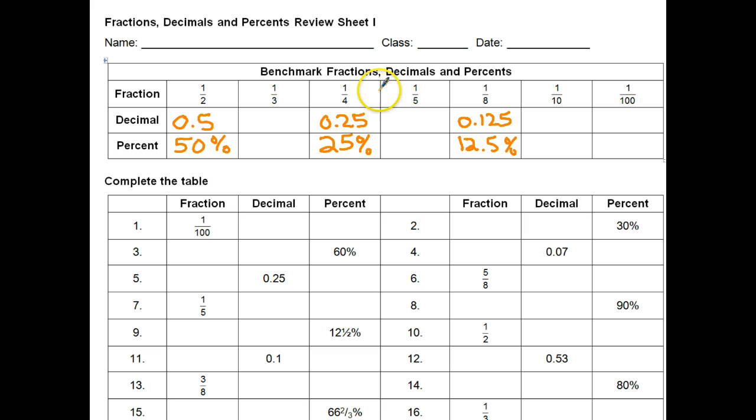So halves, quarters, and eighths - if you know a fraction of a half as a decimal in percent, you can work out a quarter and an eighth. Now one tenth is quite easy. It's just basically a tenth of a hundred percent, because a tenth of a hundred percent is ten percent. That makes that 0.1. A hundredth is just one percent, or 0.01.